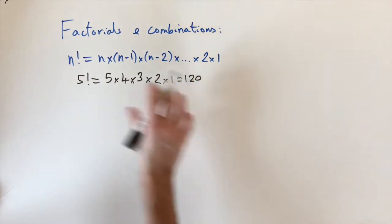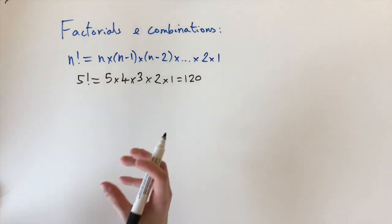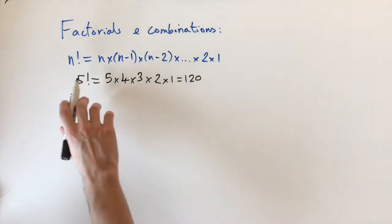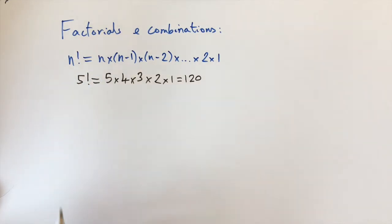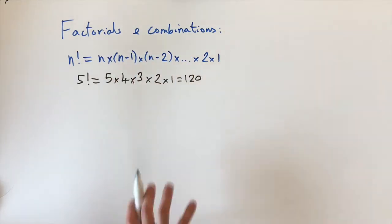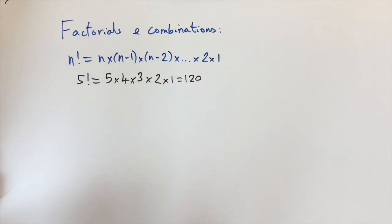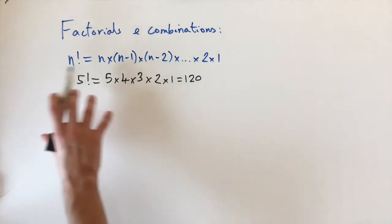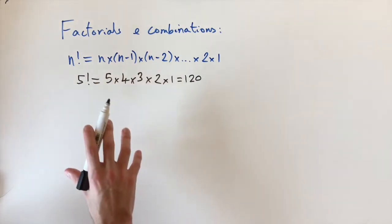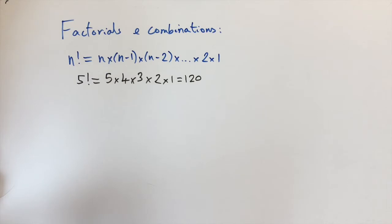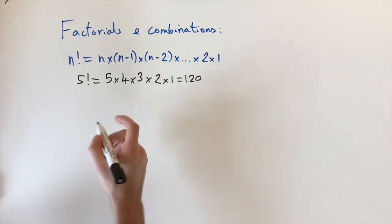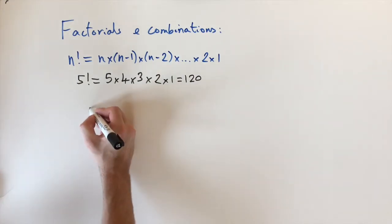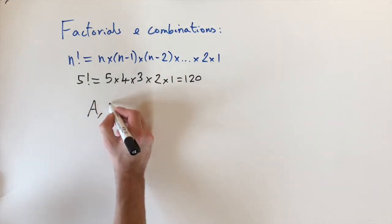Factorials get very big very quickly — if n is large then n factorial is even larger because we're multiplying all these numbers together. What's nice about factorials is that they give all the possible orderings for n objects. For example, let's look at a simple case where we have three objects.